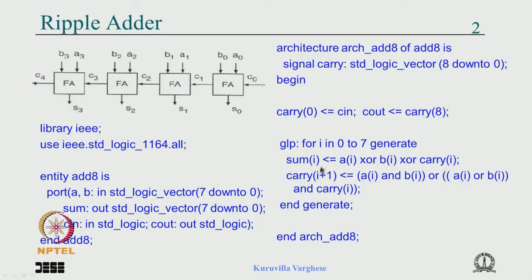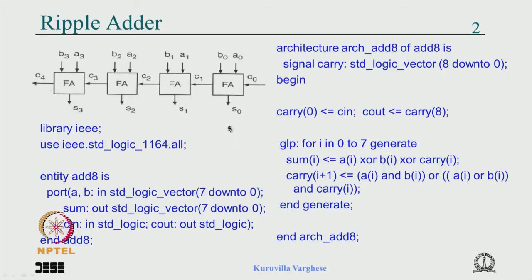Let us look at what we have done in the last lecture. We looked at the ripple adder — in the ripple adder you have full adders cascaded and the problem is delay. For the carry look-ahead adder, it is like writing the truth table and working out from the full adder. You have two equations, one for sum and one for carry. The trouble with the ripple adder is that ci+1 is derived from ai, bi, and ci, where ci is coming out of the previous stage, so it ripples and adds to the delay.